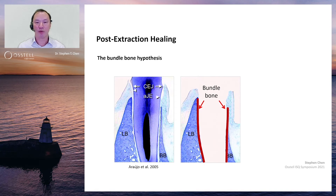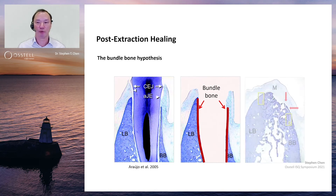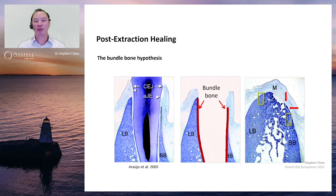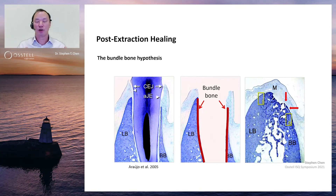On the facial aspect of the ridge, where the bone itself is relatively thin, the bundle bone often occupies the entire thickness of the facial bone plate, especially in that coronal portion. And ultimately what happens is a resorption of the ridge that takes place through both a vertical loss of the facial bone height as well as a horizontal loss of the ridge once the modeling processes start to take place.